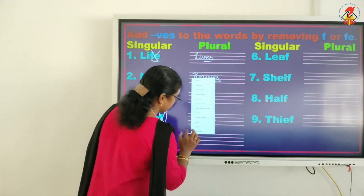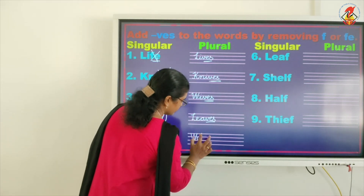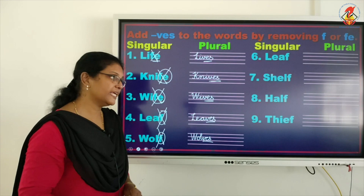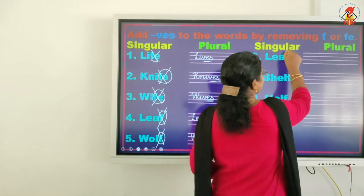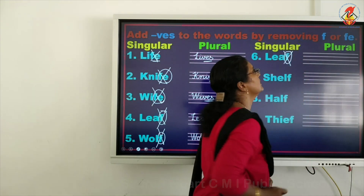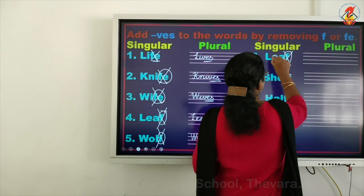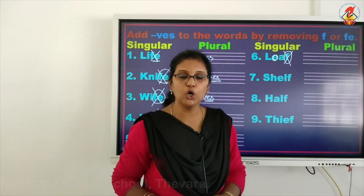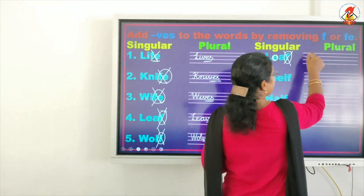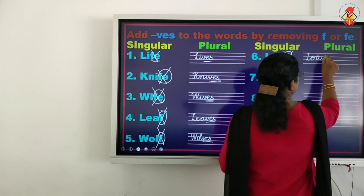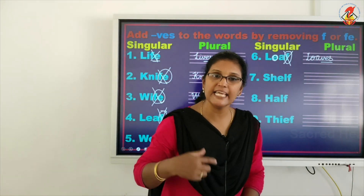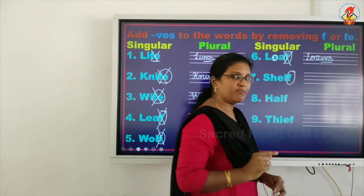Today we are going to learn another topic, another trick. To form the plural of a word that ends in F or FE — what do we do? If it is going to end in F or FE, you are going to take those letters, throw them in the dustbin, and write V, E, S in their place. If the word is ending with F or FE, you take that, throw it away, and add VES for it. Let's see a few examples.